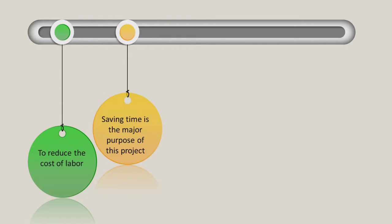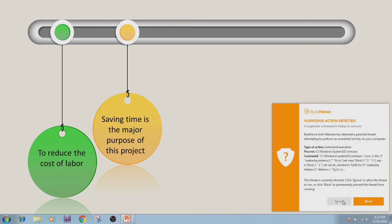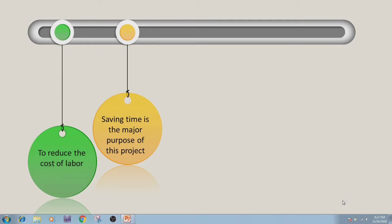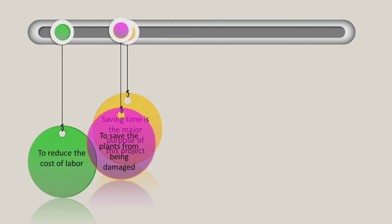The next objective is saving time, because saving time is saving money. When someone gives water to the crops, they have to wait until the water level is complete. By installing this mechanism, they don't have to wait — the system will automatically detect when to give water to the crops and will automatically turn off the motor when the water level is fulfilled in the field.